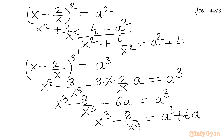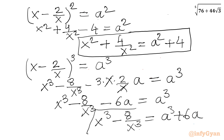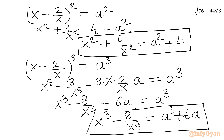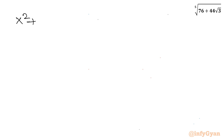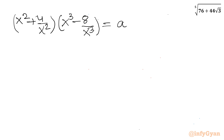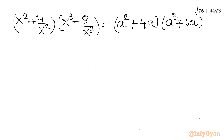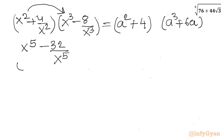Now I will take the product of (x squared plus 4/x squared) and (x cubed minus 8/x cubed). Multiplying out: x squared times x cubed gives x power 5, and 4/x squared times (-8/x cubed) gives minus 32 over x power 5, which together equal 152. The cross terms give 4x minus 8/x, which is 4 times (x minus 2/x), equal to 4a. The right hand side is (a squared plus 4)(a cubed plus 6a).